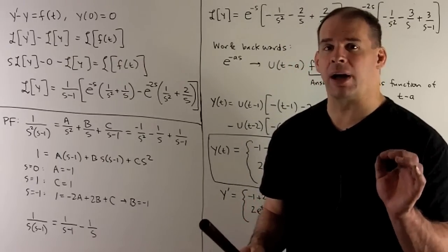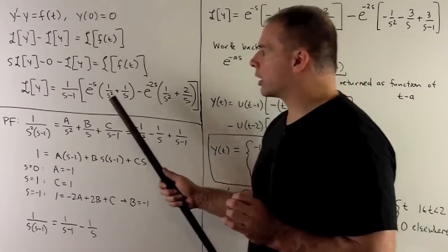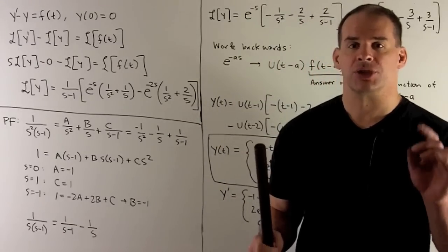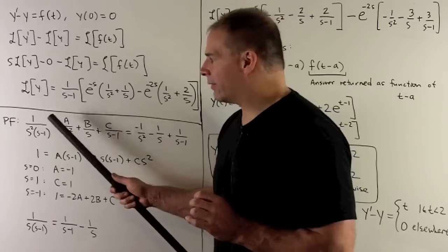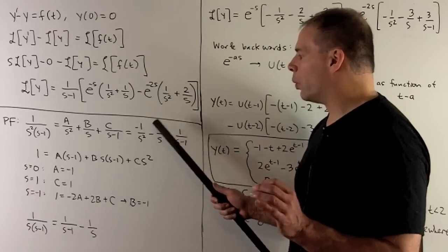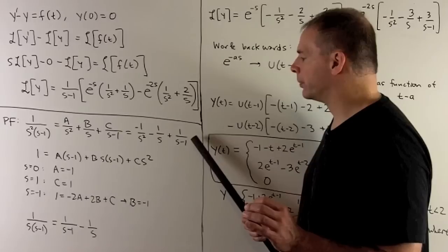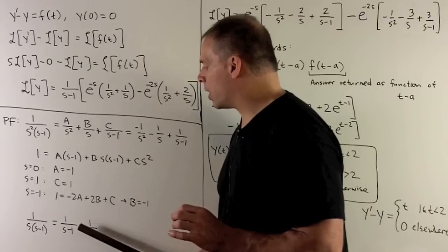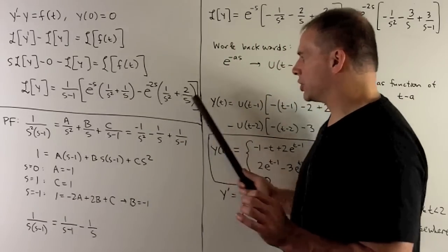We work one over s minus one into each term and apply partial fractions. We need two partial fraction expansions. For one over s squared times s minus one, we get minus one over s squared minus one over s plus one over s minus one. For one over s times s minus one, we get one over s minus one minus one over s.